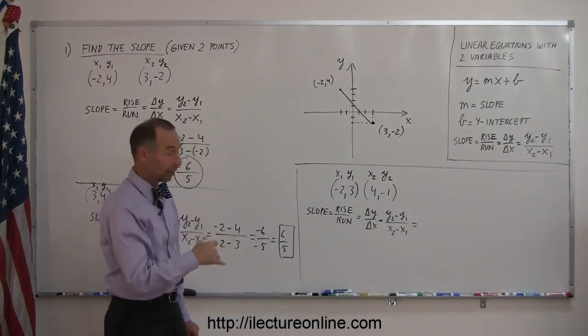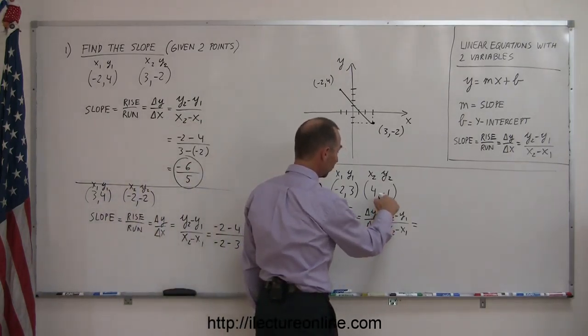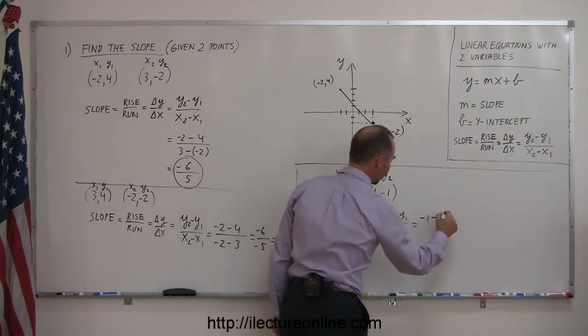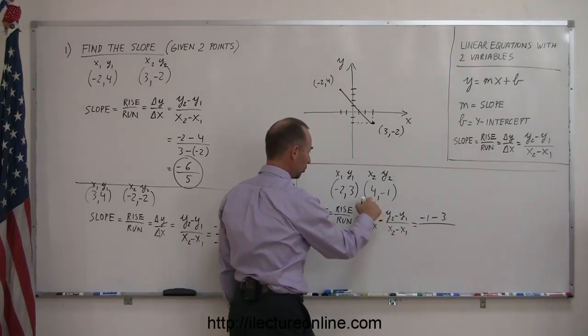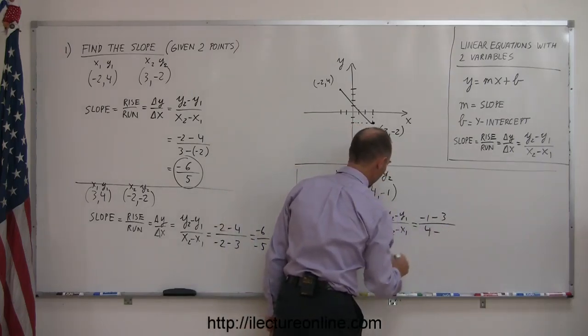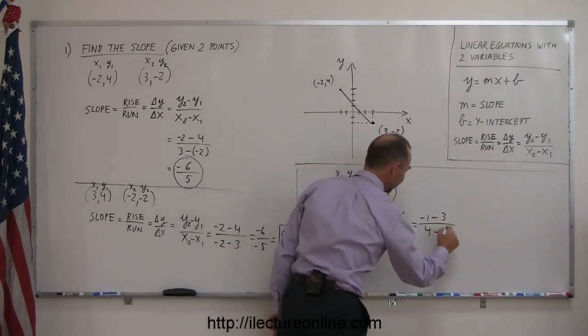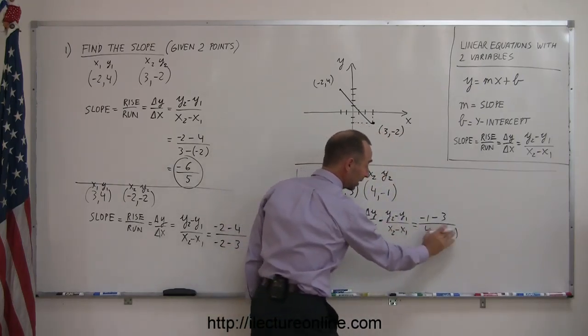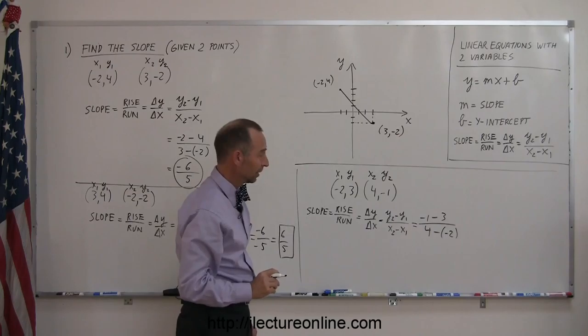Now go ahead and plug in the associated numbers. Y2 is over here, that's a negative 1, minus y1 over here, which is a 3, divided by x2 which is 4, minus x1 which is a negative 2. Again, put in the parentheses, because when you subtract a negative number, that becomes positive.